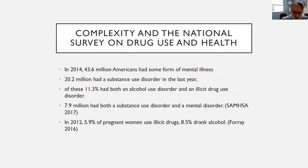Looking at statistics about complexity from the National Survey on Drug Use and Health: in 2014, 43.6 million Americans had some form of mental illness, and about 20.2 million had a substance use disorder in the last year. Of those, 11.3% had both an alcohol and illicit drug use disorder, and 7.9 million had both a substance use disorder and a mental disorder. The complexity is almost the norm. In 2012, 5.9% of pregnant women used illicit drugs and 8.5% drank alcohol.